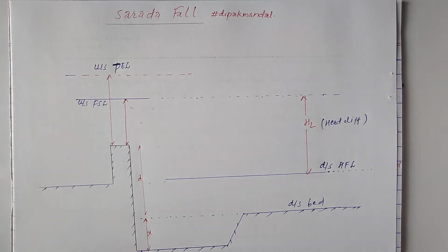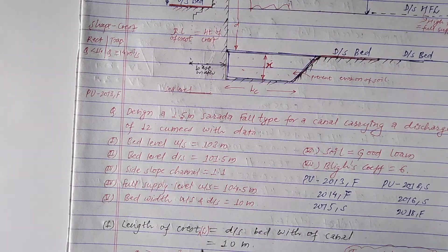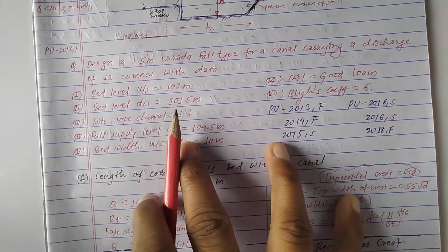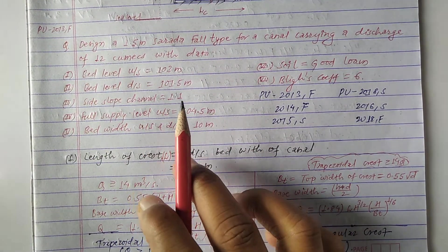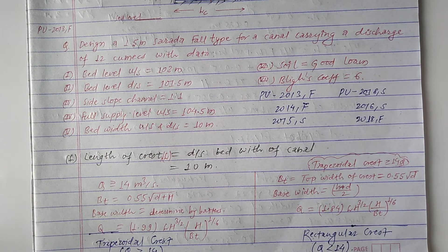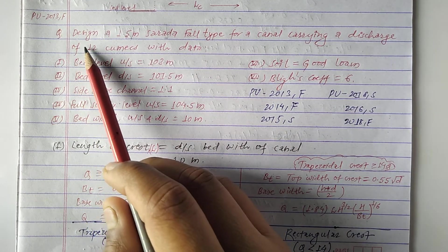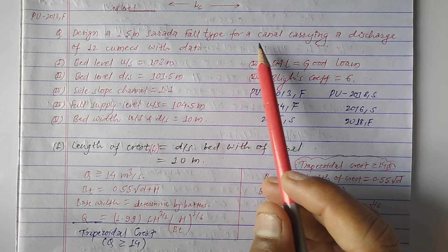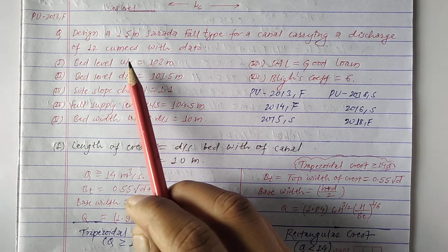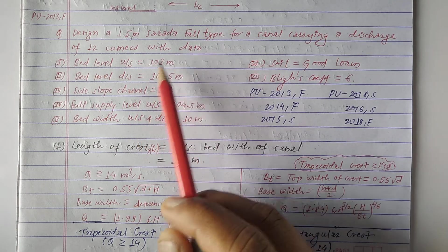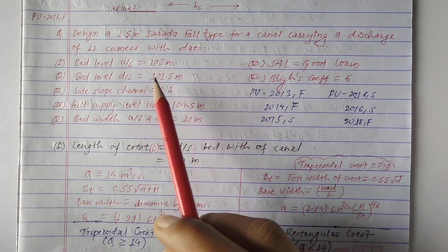Hello everyone, welcome to another new video. In this video we will study about Sarda fall — how can we design Sarda fall. We have one question here related to the designing of Sarda fall. The Sarda fall is also known as vertical type fall or vertical drop fall. The question is: design a 1.5 meter Sarda fall type for a canal carrying a discharge of 12 cumecs (meter cube per second) with the following data.